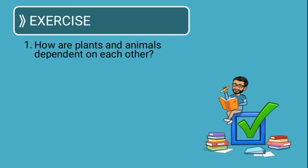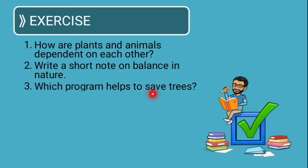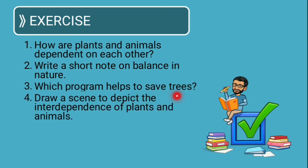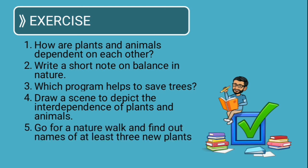Well that was all for today. These are some questions that you can try out at home. How are plants and animals depend on each other? Write a short note on balance in nature. Which program helps to save trees? Draw a scene to depict the interdependence of plants and animals. And lastly you have to go for a nature walk and find out names of a few plants. Maybe at least three you can try. So this is an exercise for you.